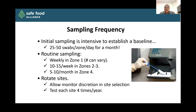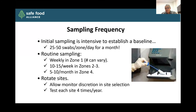Sampling is basically very intense to establish a baseline — sometimes that might be anywhere from 25 to 50 swabs per zone per day for a month until you get enough data. Then once you have a baseline and can see what to expect from your facility, you can fall into that more routine sampling. You also want to rotate your sites and allow your monitor some discretion in site selection. You may want to test each sample site about four times a year because you can see some seasonal variations in contamination, and that's important to know.